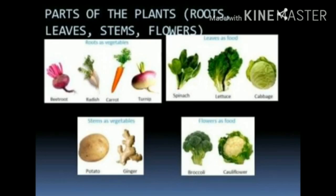Food from leaves, for example: spinach, fenugreek, cabbage, and mustard. Then food from flowers, for example: cauliflower and broccoli.